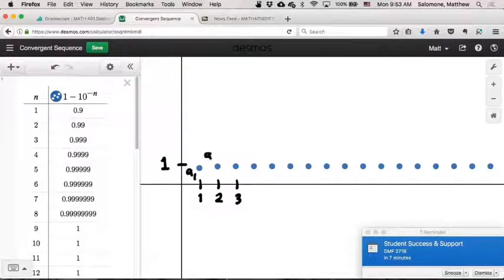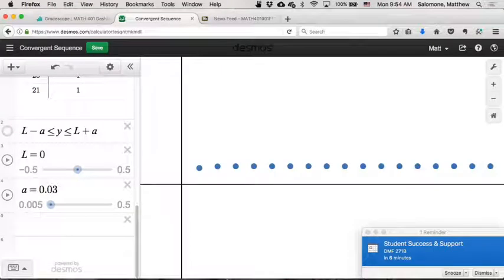So here's a1, a2, a3. And so if it's true that these values are, in fact, getting closer and closer to 1, then what might we see on this graph? Well, the first thing we might see...